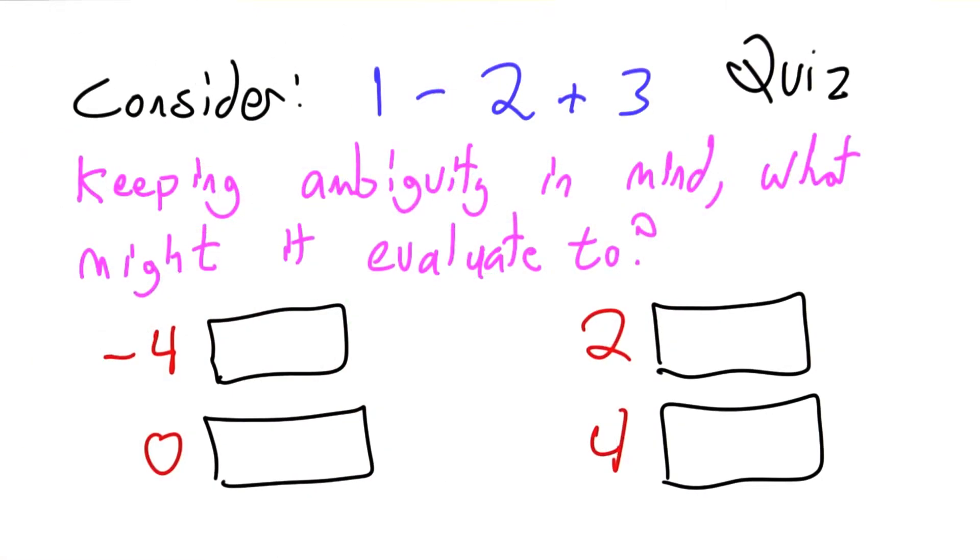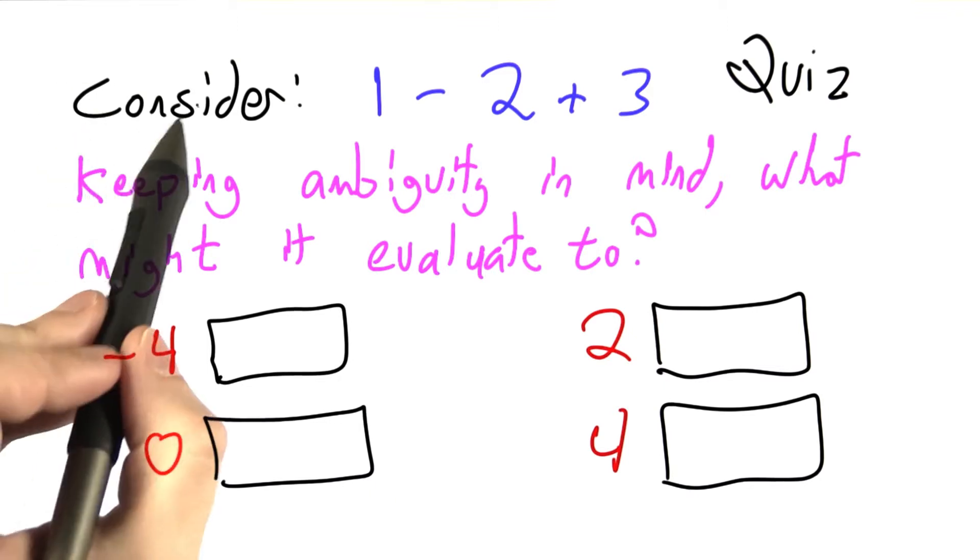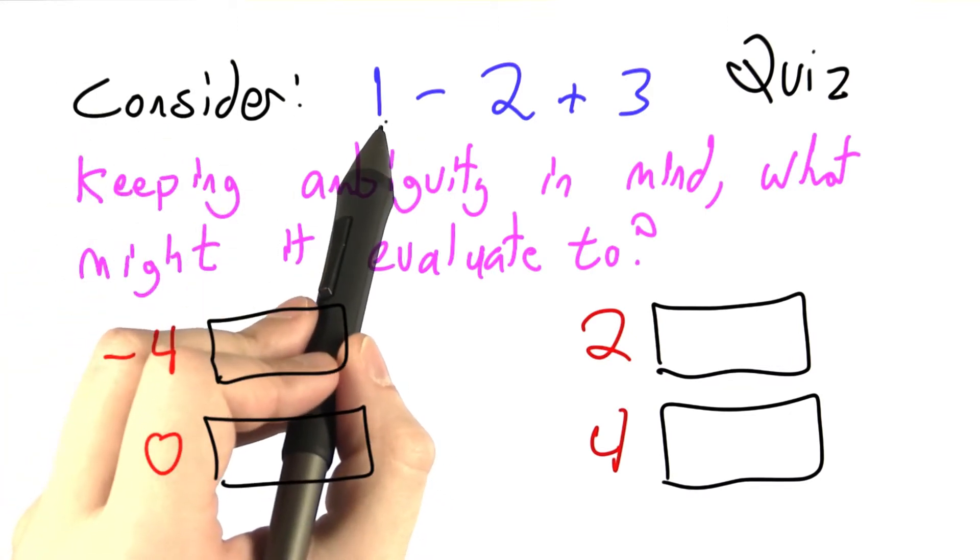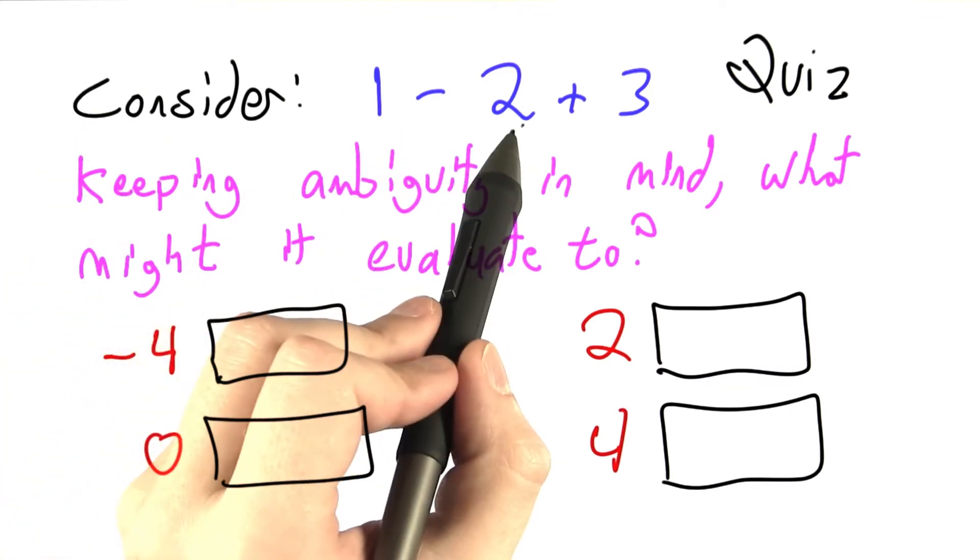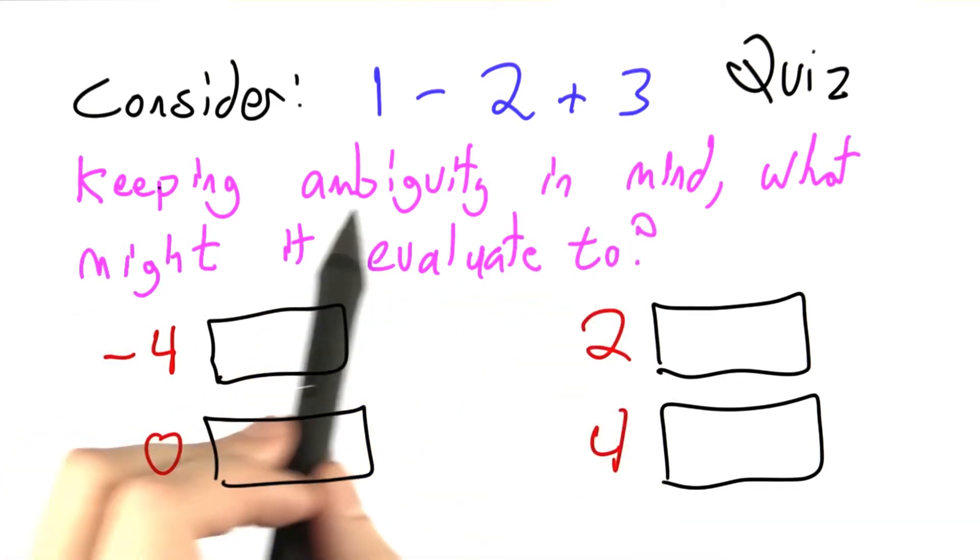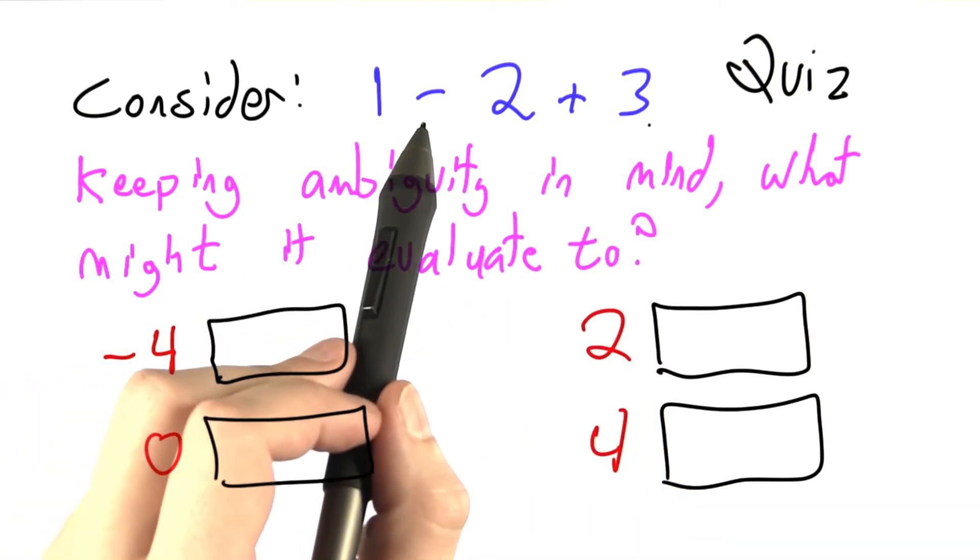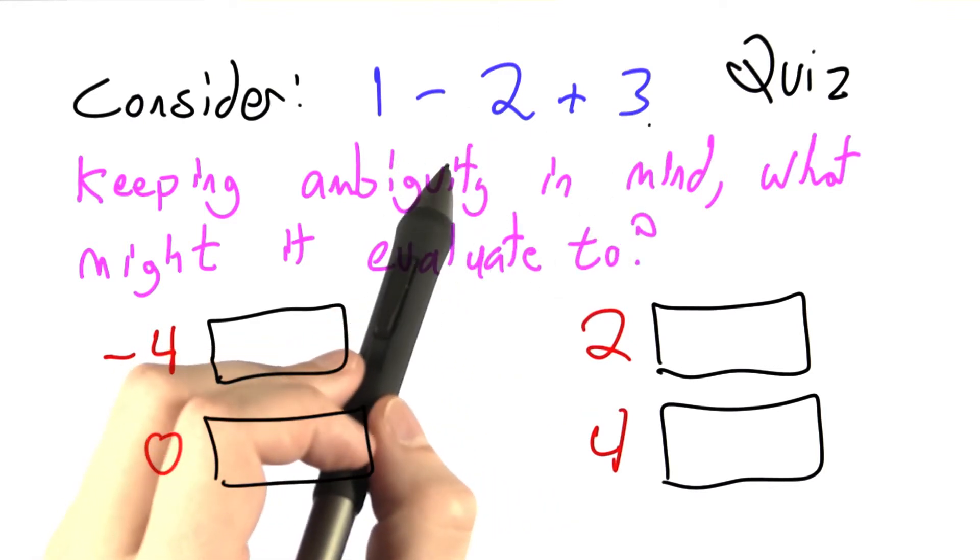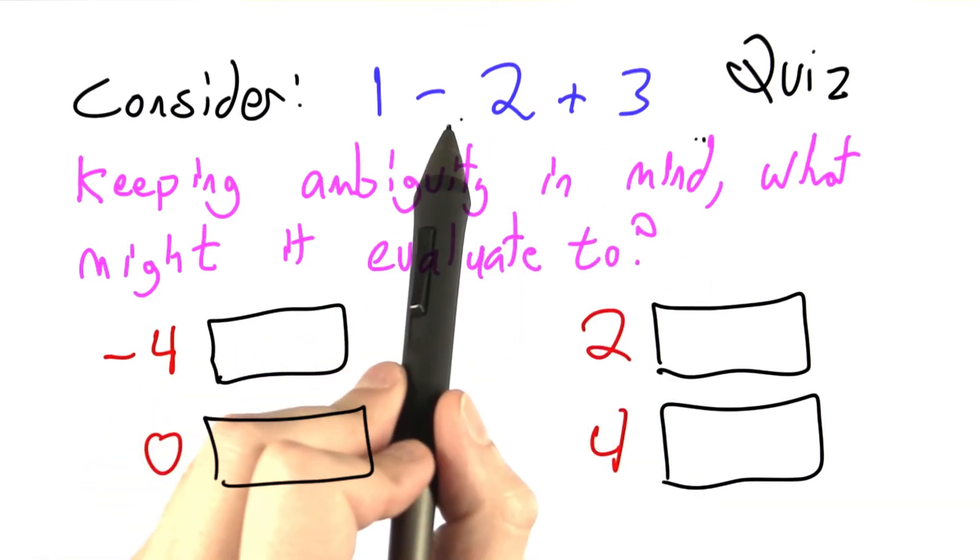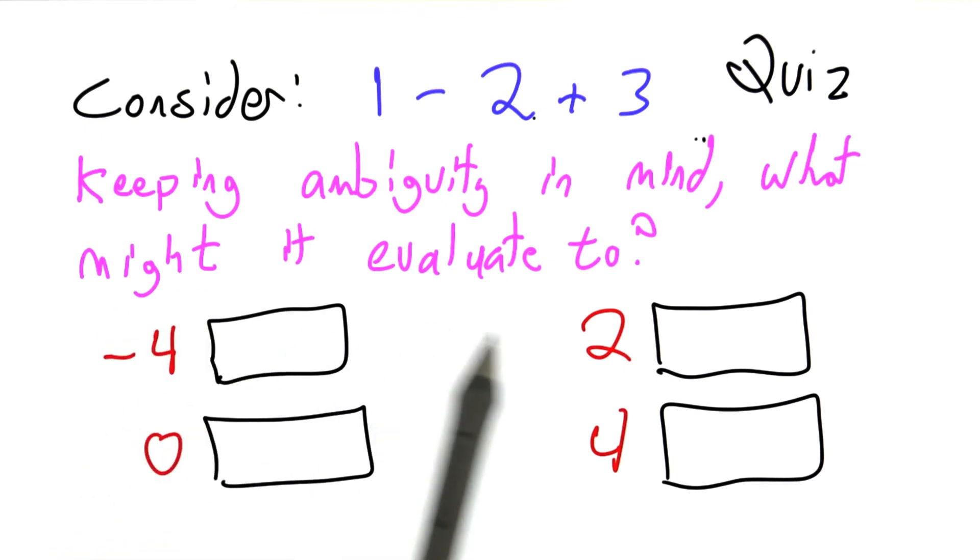It's quiz time. A quiz on ambiguity. Consider the expression 1 minus 2 plus 3. Keeping ambiguity in mind, if this were in Python or JavaScript, or even just on the whiteboard or on a piece of paper in mathematics. This is a mathematical expression. What might it evaluate to?